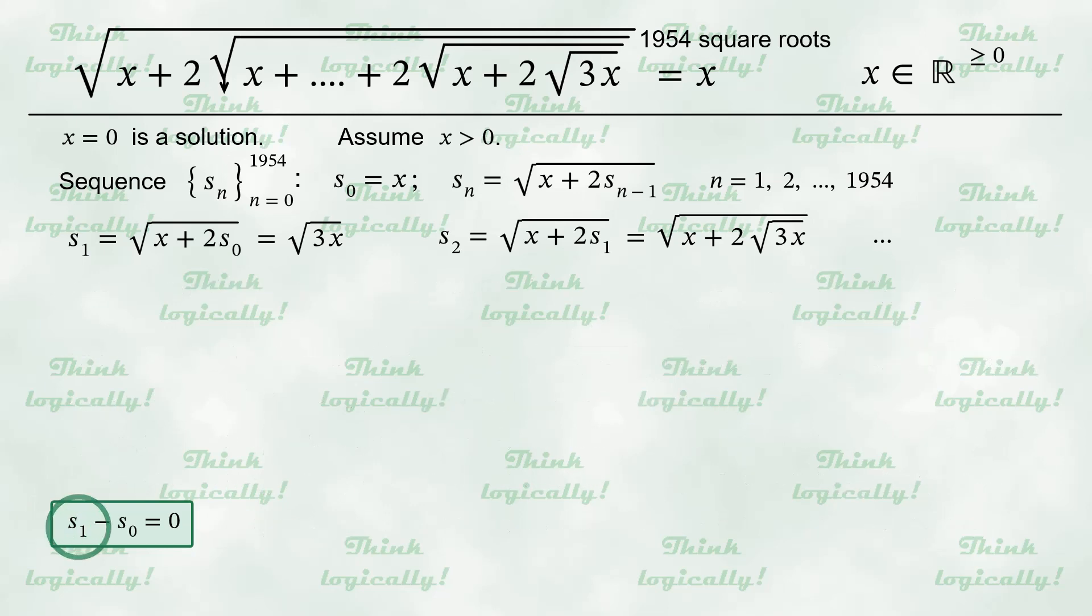We have S sub 1 equals square root of 3 times x, while S sub 0 is just x. So, this is the equation we need to solve, and we can solve it in mind. Just to avoid a possible confusion, let me divide both parts by square root of x, which is positive.